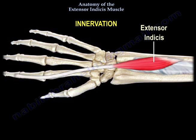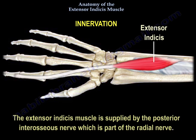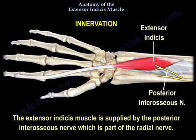The extensor indicis muscle is supplied by the posterior interosseous nerve, which is part of the radial nerve.